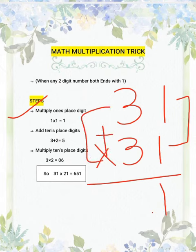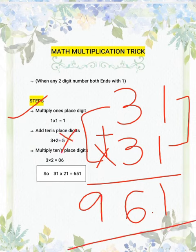Second step is you need to add them. 3 plus 3 gives you 6. Third step is you have to multiply 3 into 3, gives you 9. So 961 is the answer.